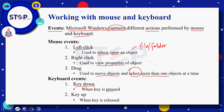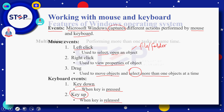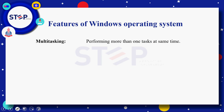Keyboard events میں ہمارے پاس key down ہے — جب بھی آپ کوئی بھی key press کریں گے تو وہ event key down کہلائے گا۔ Similarly جب بھی آپ کسی pressed key کو release کریں گے تو وہ event key up کہلائے گا۔